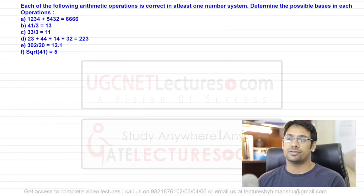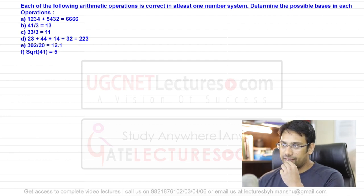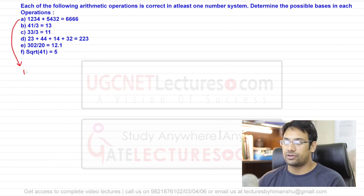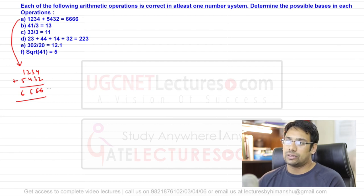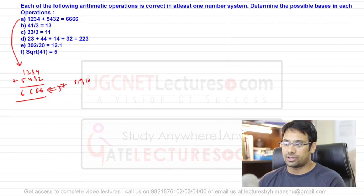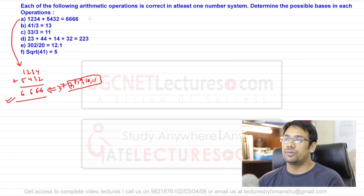Now consider a set of six arithmetic questions. We need to determine the possible base in each. Part (a): 1234 + 5432 = 6666. The highest symbol here is 6, so the base must be greater than or equal to 7. This expression is valid for any base b ≥ 7.